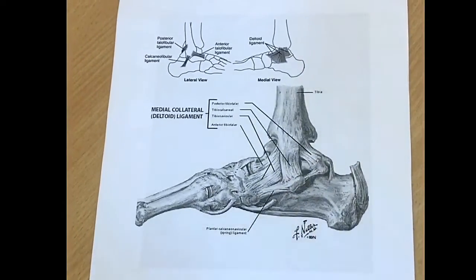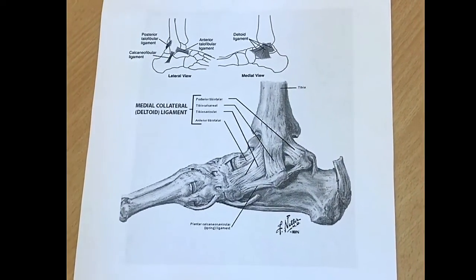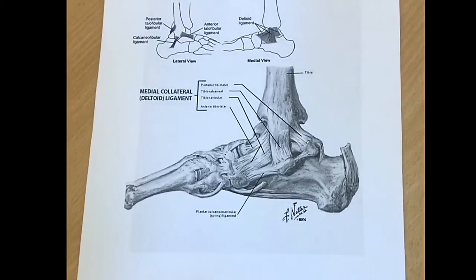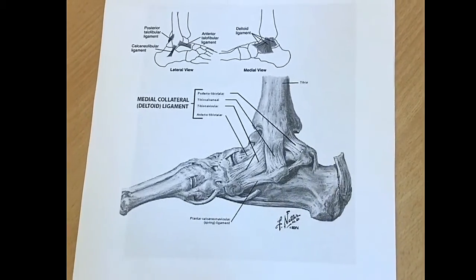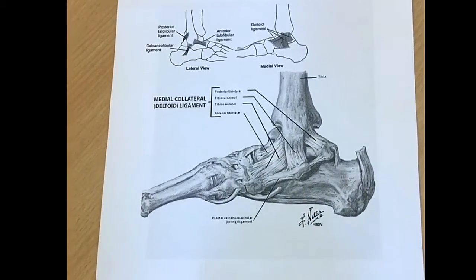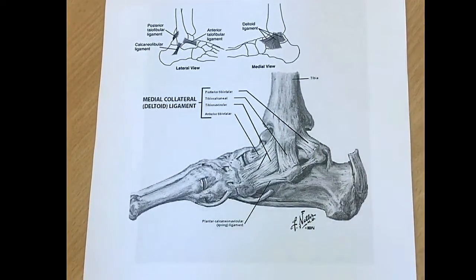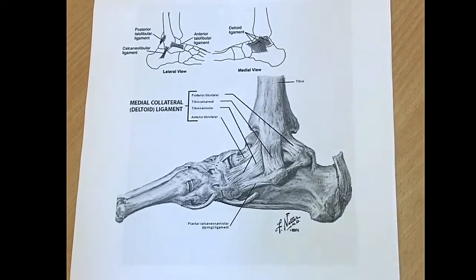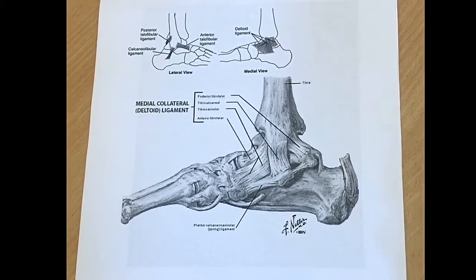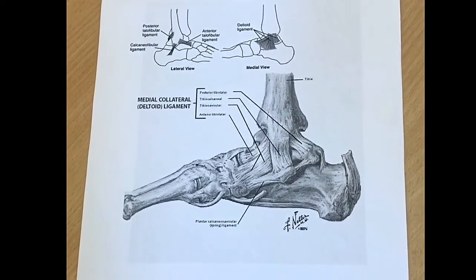Welcome to today's tutorial. We will be talking about ankle fractures. I will first take you through the structures of the ankle, then the fractures — Weber A, B, and C — and then later we'll take you through some extra examples.